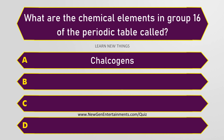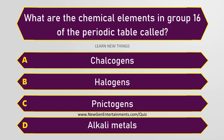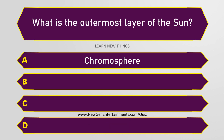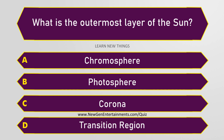What are the chemical elements in group 16 of the periodic table called? Chalcogens. What is the outermost layer of the Sun? Corona.